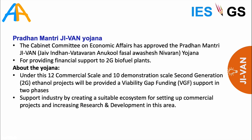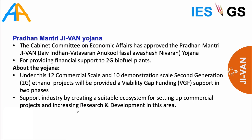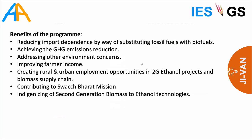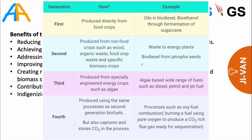The Cabinet Committee on Economic Affairs approved Pradhan Mantri JI-VAN Yojana — note that despite the name 'Jeevan,' it is about biofuels, not health or biodiversity. It provides financial support to second-generation biofuel plants. First-generation biofuels are produced directly from food crops like sugarcane, corn, and rice, but this affects food security. Second-generation biofuels are produced from non-food crops, food waste, or specially cultivated crops like Jatropha.